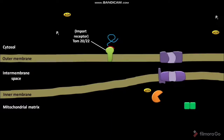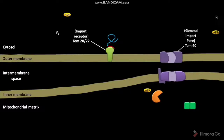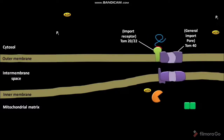The outer membrane of the mitochondrion also has a protein called TOM40, otherwise called the general import pore. TOM40 is called such because all non-mitochondrial precursor proteins gain access to the interior compartments of the mitochondrion through it. TOM20 or TOM22 then transfers the bound precursor protein to the TOM40 channel.